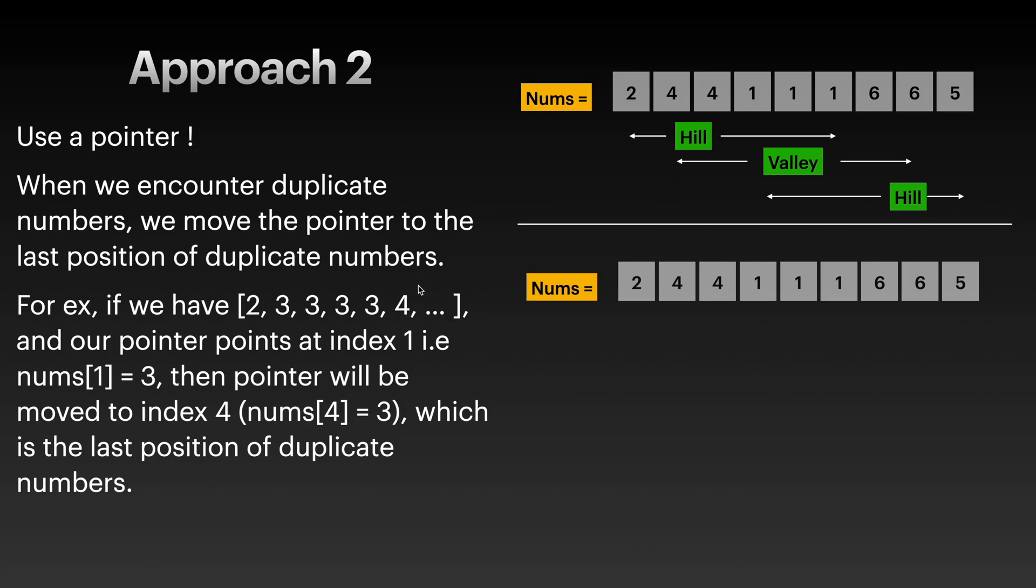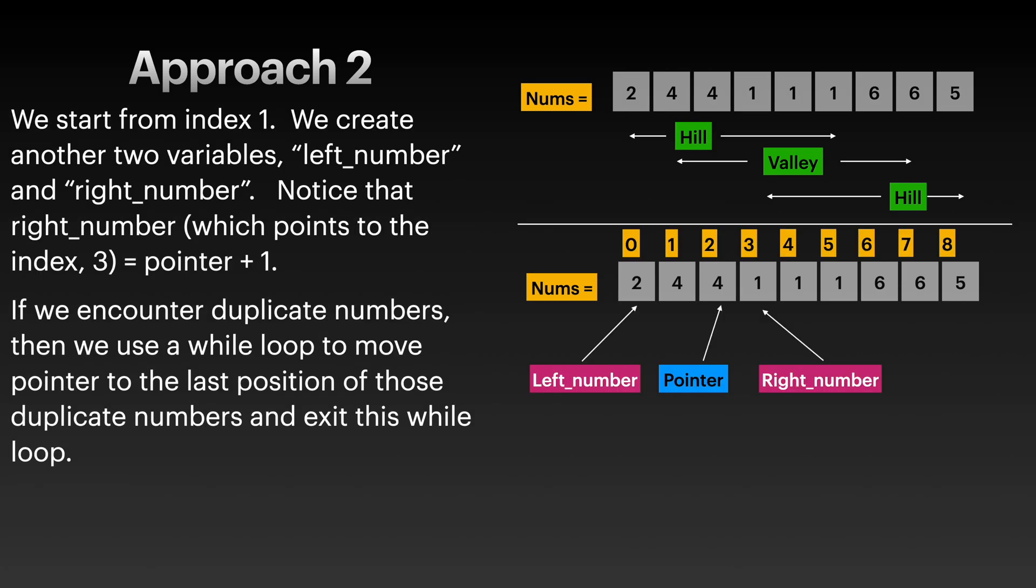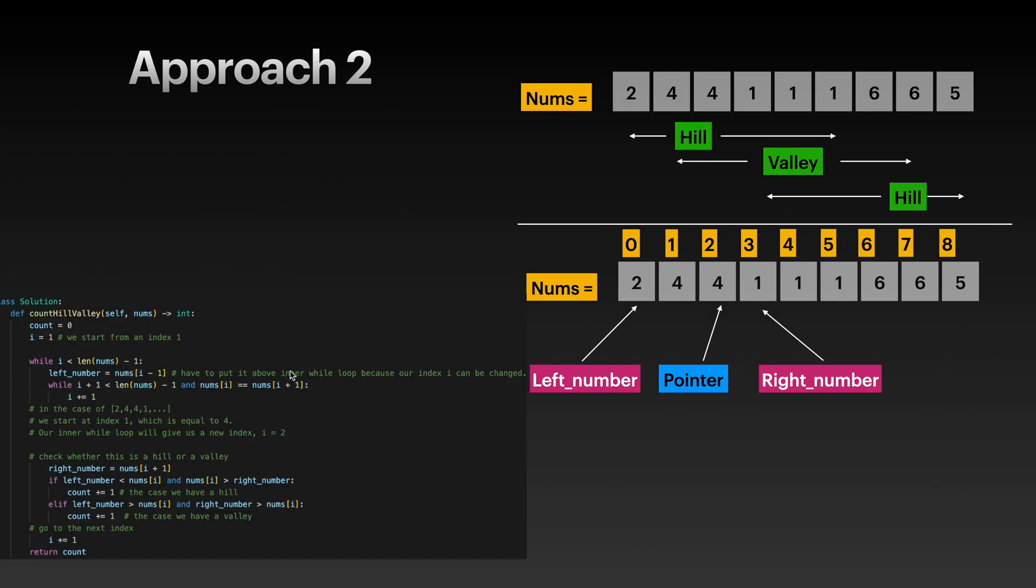Our right_number will be this guy. You can see that our left_number is this, our pointer is pointing at this one, and our right_number is pointing at this one. We can then compare those three numbers to determine if we have a hill or a valley. Here I have two more variables: left_number is pointing here, right_number is pointing here. Our pointer was initially pointing at index one, but then we use an inner while loop to move our pointer to here.